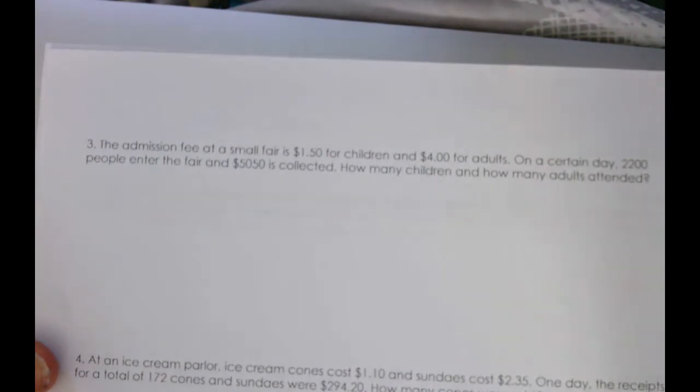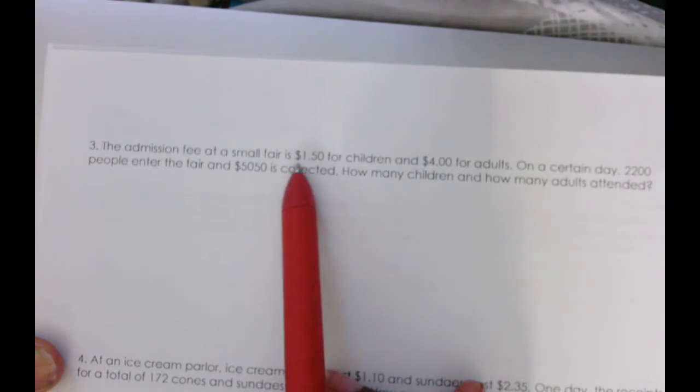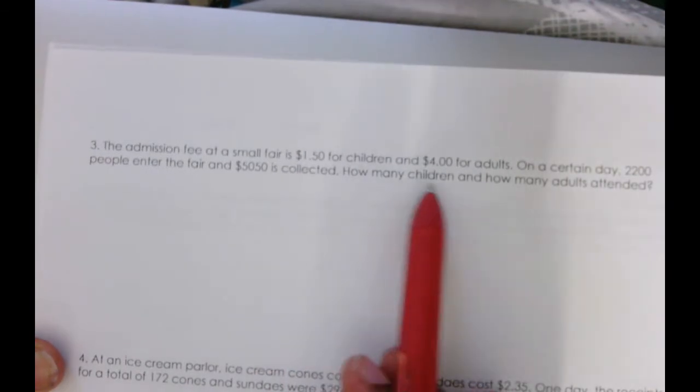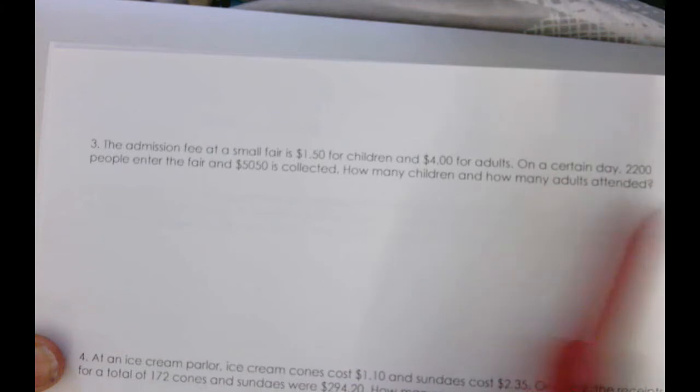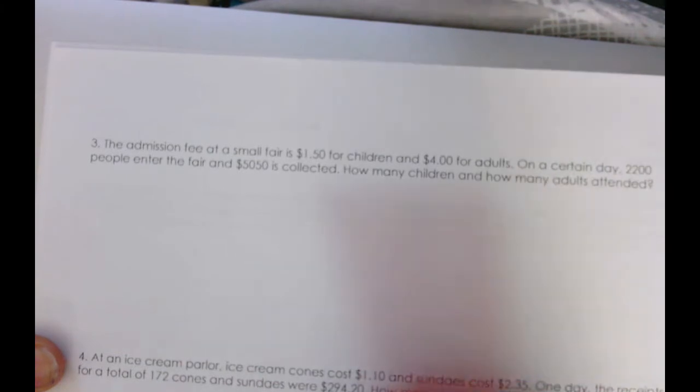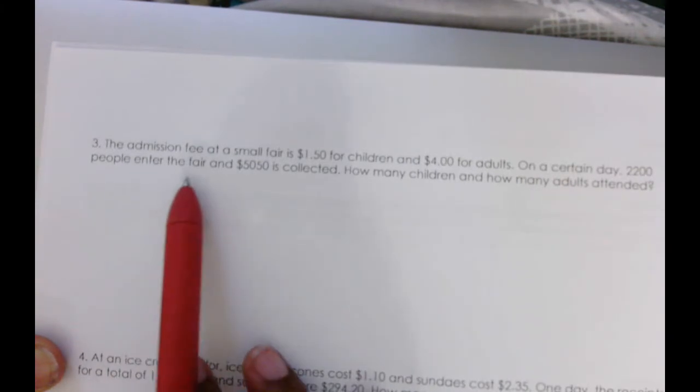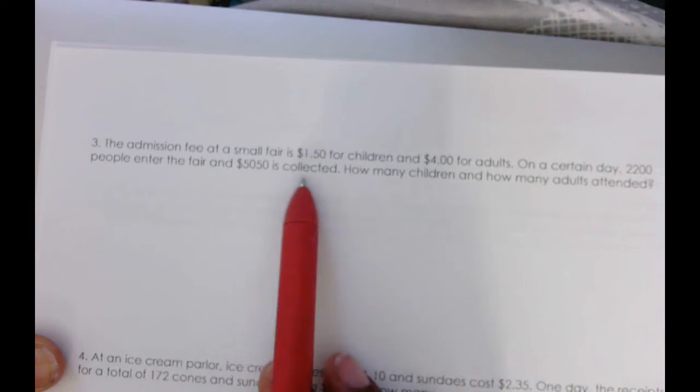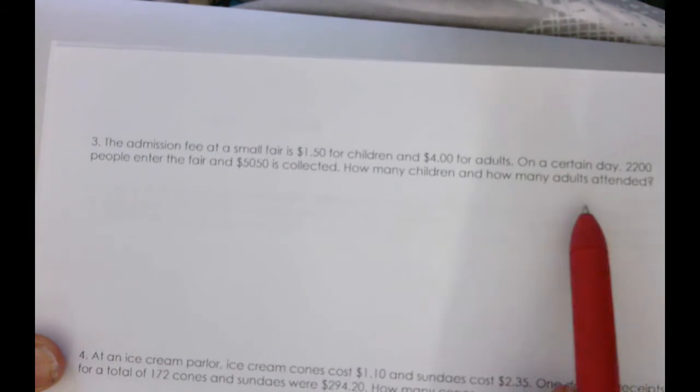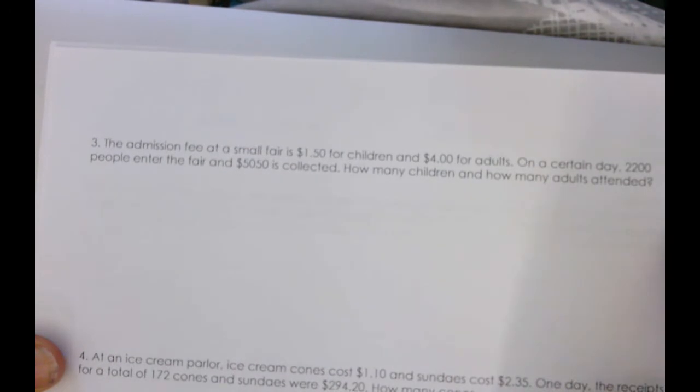First thing I want to do is annotate the problem. The admission fee at a small fair is $1.50 for children and $4.00 for adults. On a certain day, 2,200 people entered the fair and $5,050 is collected. How many children and how many adults attended?